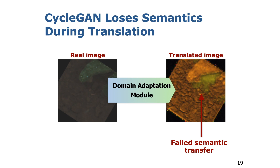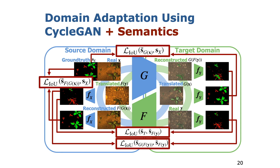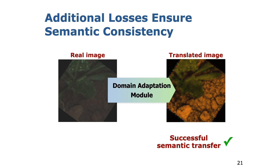The problem with CycleGANs is that they give no guarantee to preserve the semantic information for the translated images. However, semantic consistency during translation is key to train the target FCN. We propose additional semantic consistency constraints for training the domain adaptation. We include the two domain-specific FCNs into the training process and compute additional semantic losses that add to the overall training objective. The key idea is that all images of one cycle should share the same semantic information and be classified in the same way before and after translation. This example shows that the additional semantic losses force the generators to produce semantically consistent images in the opposite domain.